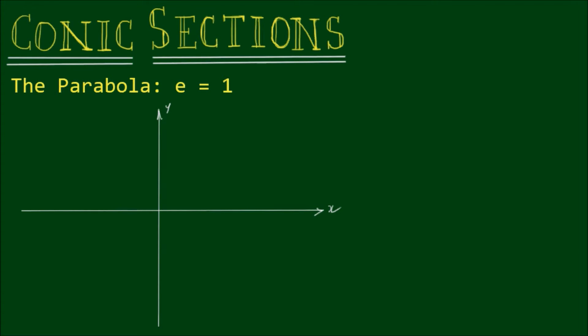Okay, so previously we did an exercise to show that graphically when the eccentricity is equal to 1, the conic section that is formed is a parabola.